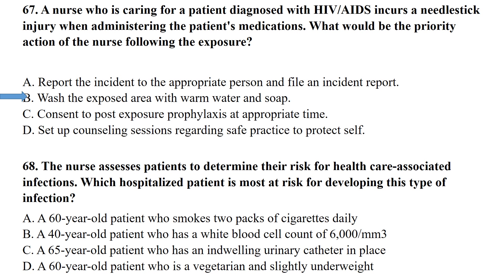The nurse assesses patients to determine their risk for healthcare-associated infections. Which hospitalized patient is most at risk for developing this type of infection? A 65-year-old patient who has an indwelling urinary catheter and an IV line in place.